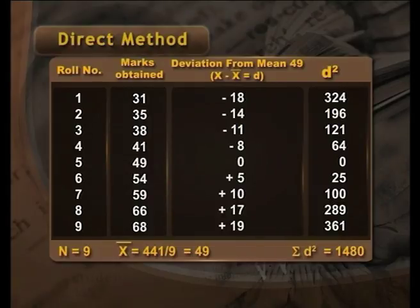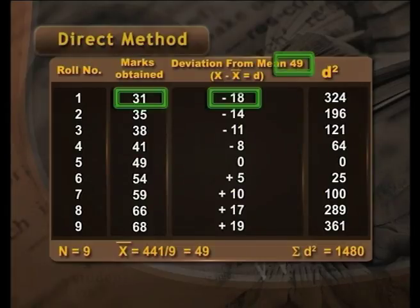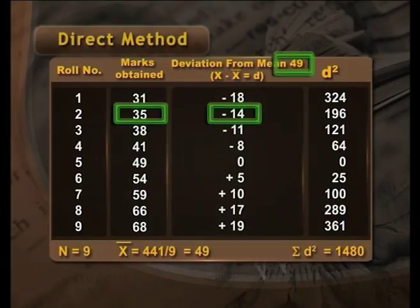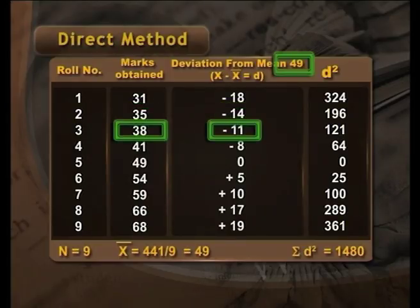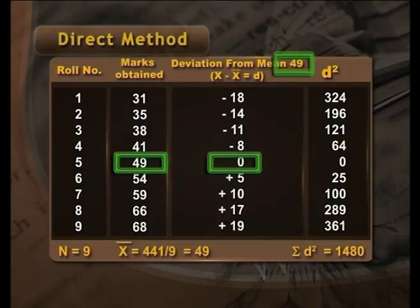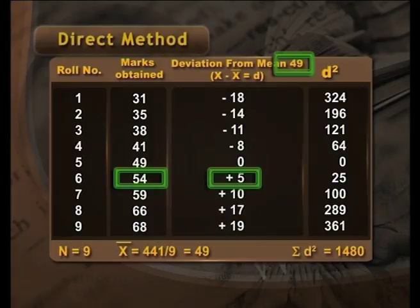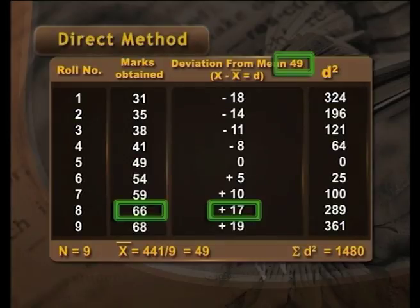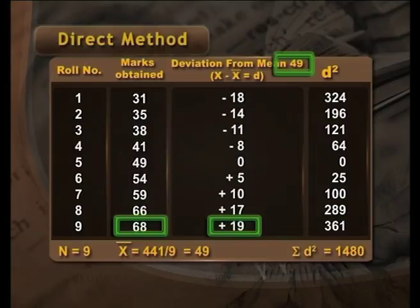We calculate deviation by subtracting the mean from the marks obtained. 31 minus 49 gives minus 18. 35 minus 49 gives minus 14. 38 minus 49 gives minus 11. 41 minus 49 gives minus 8. 49 minus 49 gives 0. 54 minus 49 gives plus 5. 59 minus 49 gives plus 10. 66 minus 49 gives plus 17. 68 minus 49 gives plus 19.